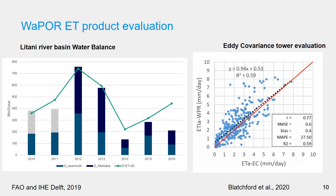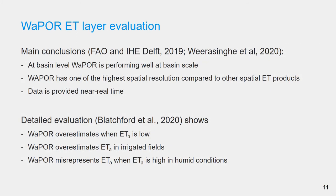This scatter could also be related to the temporal resolution of the different datasets. The main conclusion from the publications is that WAPOR is generally performing well and is at the top of its class. In addition, WAPOR has the highest spatial resolution compared to the other ET data, and the data is provided near real-time. Detailed evaluation showed WAPOR overestimates when ETA is low and in irrigated areas, and it does not perform well in humid conditions with high ET values. More information can be found in the mentioned publications.